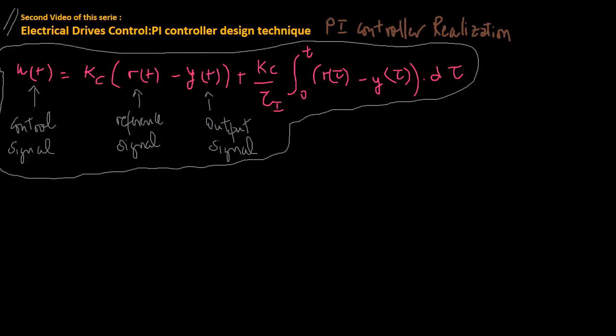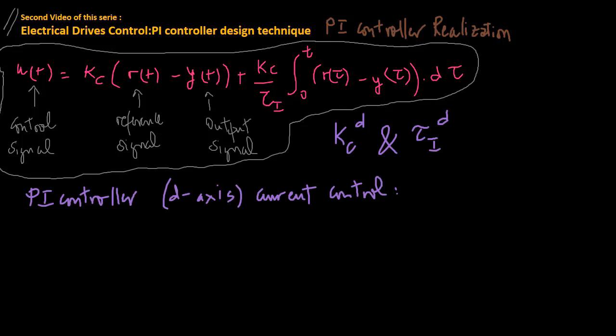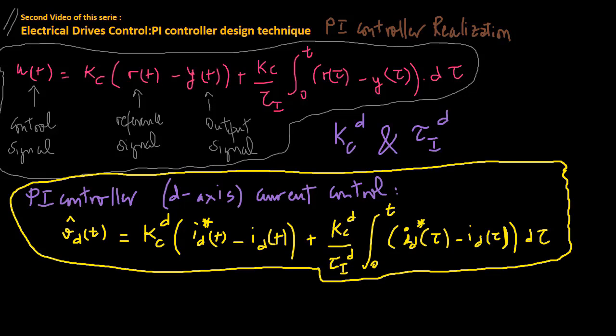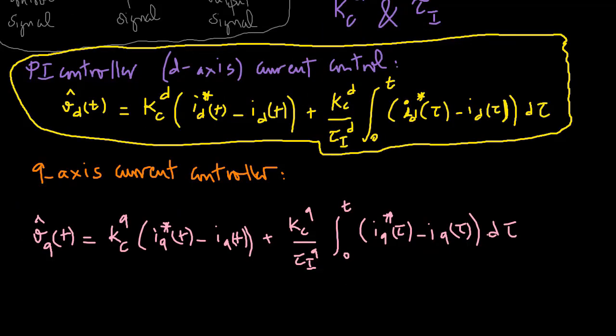Using a proportional gain Kc and an integral time constant tau i, the PI controller for the d-axis current control has the following form. A similar PI controller form is assumed for the q-axis current control.